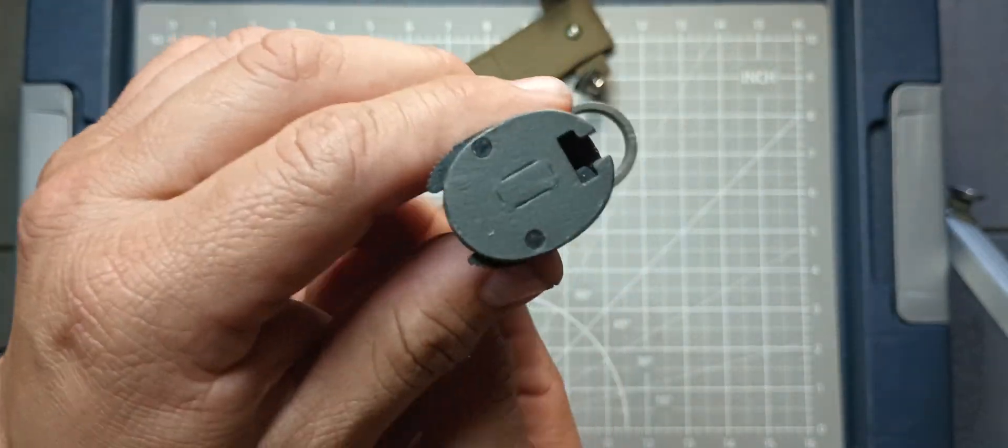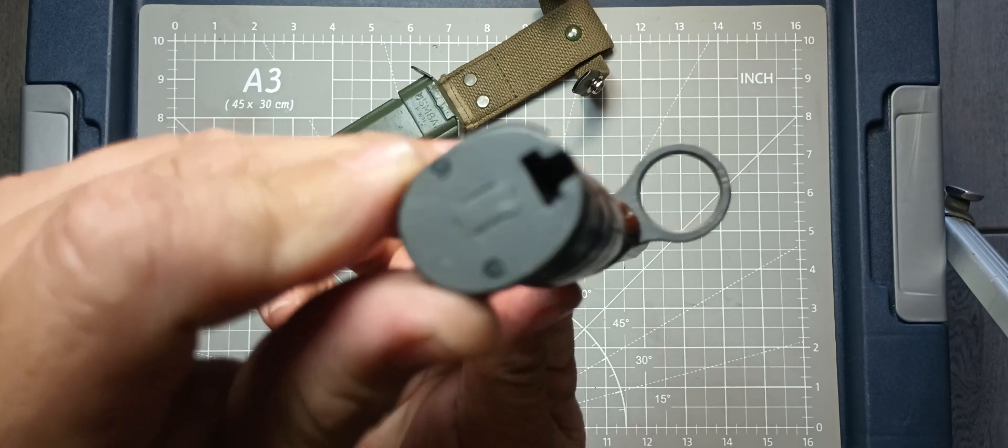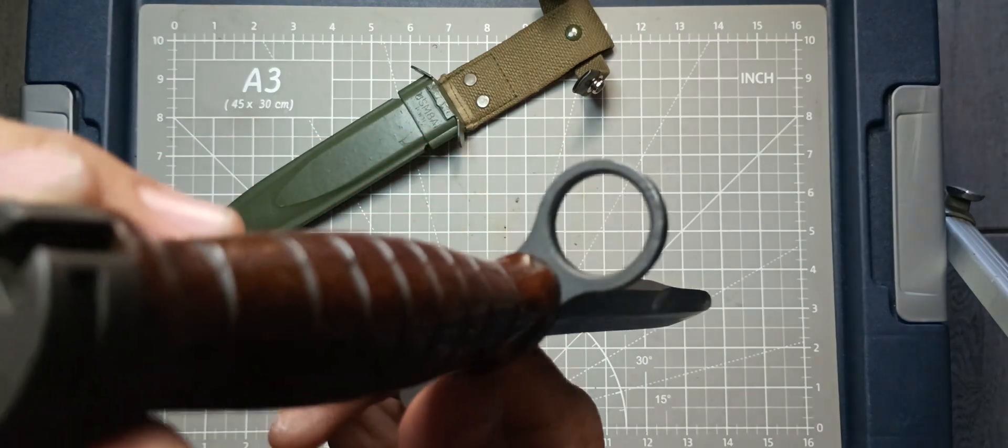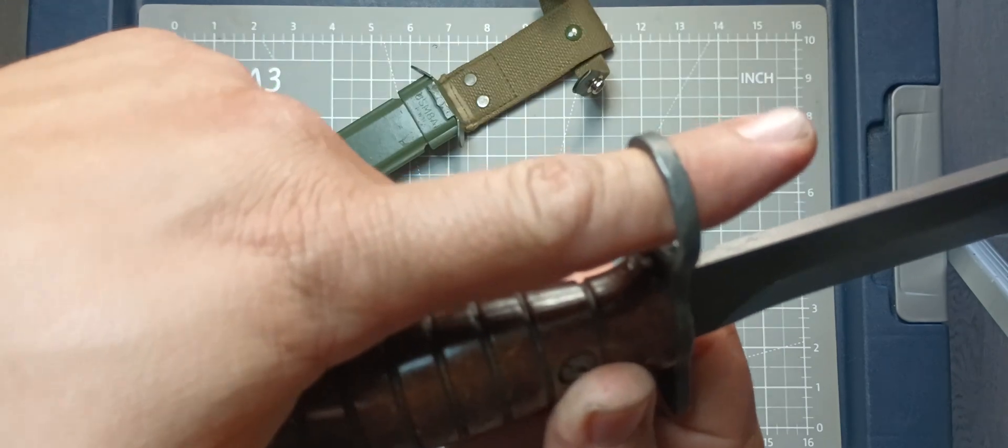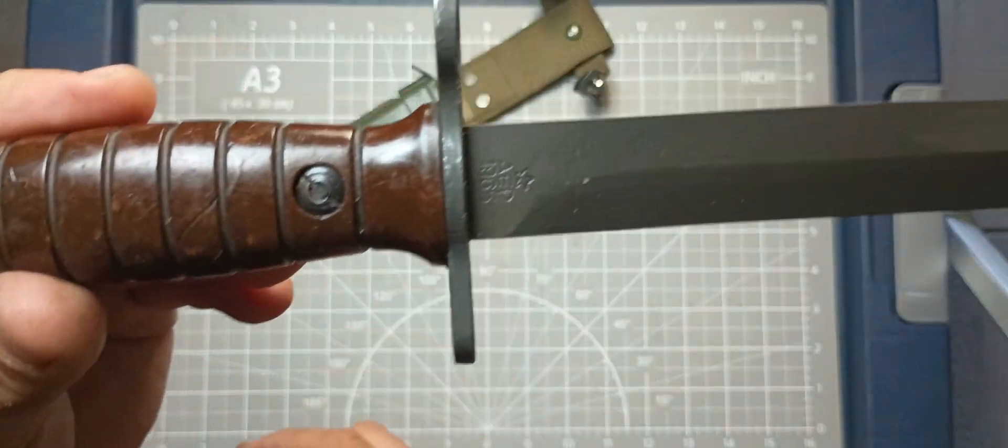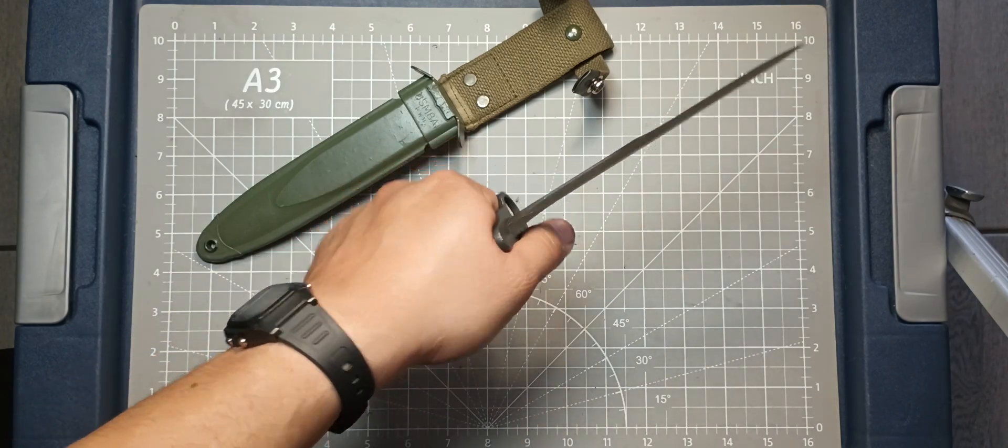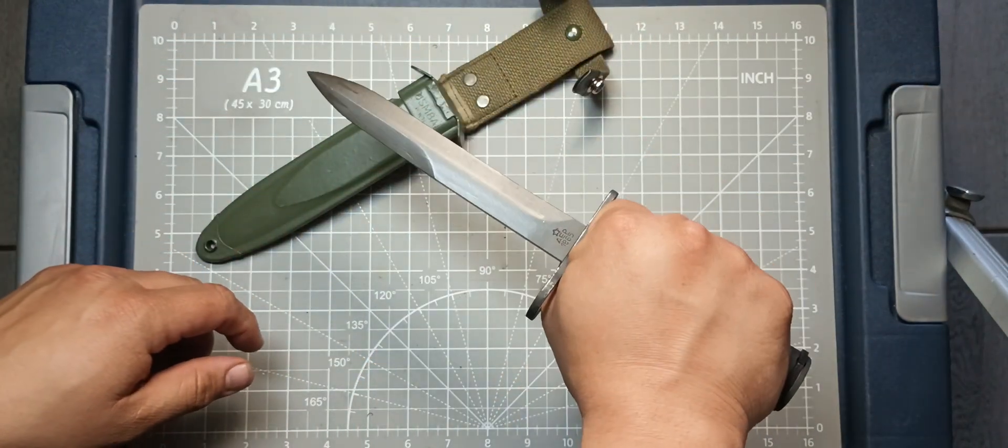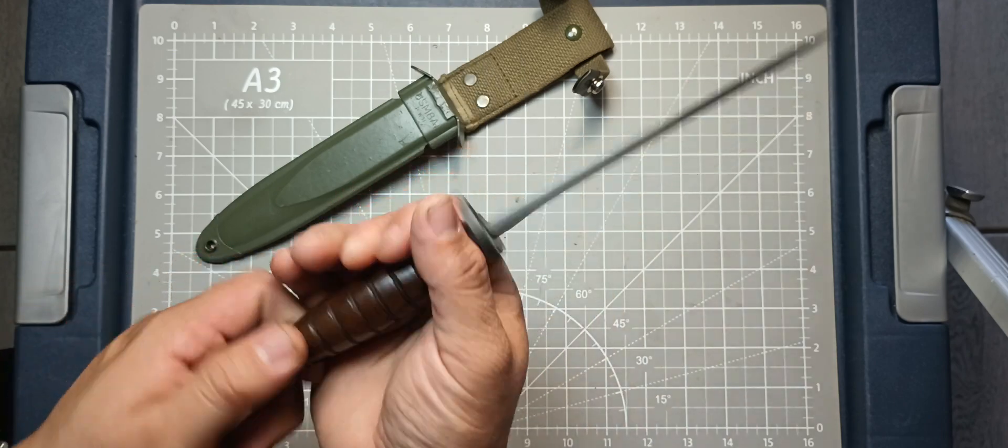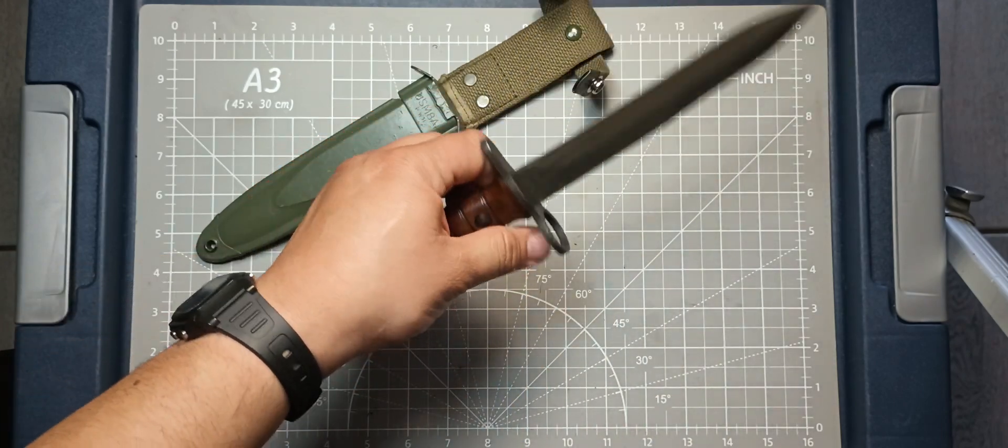It has your bayonet leg right here. And then it has your other, where the muzzle of the rifle would sit. These knives, I think if you put an edge on them, I think it's a cool field knife. Excellent field knife, excellent tool for what it is.